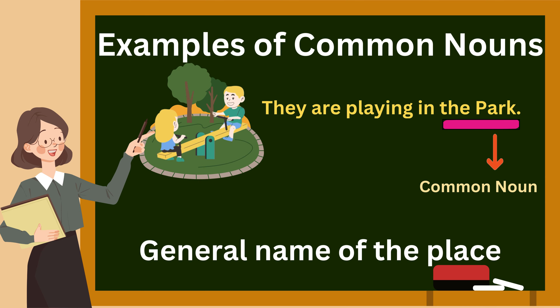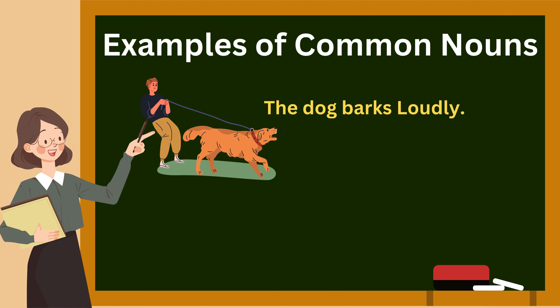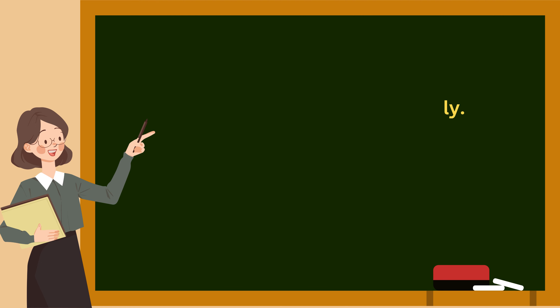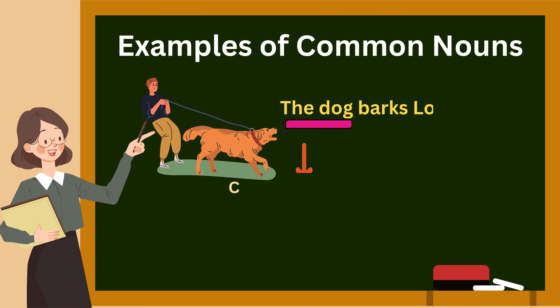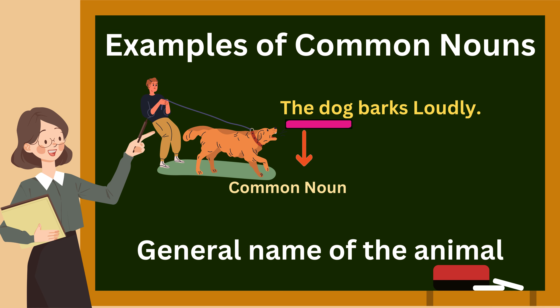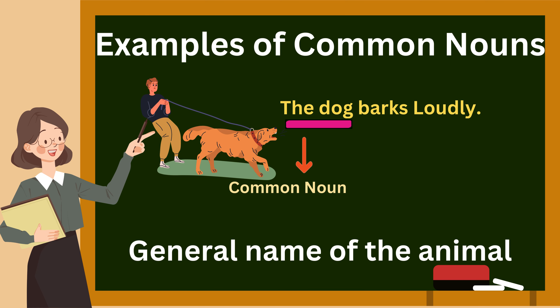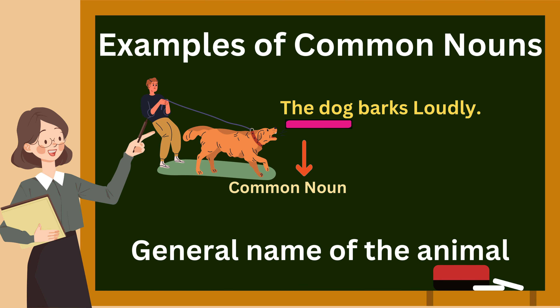'The dog barks loudly.' In this sentence, 'dog' is the common noun. It is the general name of an animal.